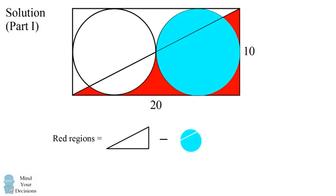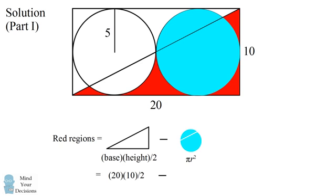We now solve for the area of each piece. The area of a right triangle is its base times its height divided by 2. The area of a circle is pi times r squared. The right triangle has a base of 20 and a height of 10. The circle has a radius equal to half the height of the rectangle, so the radius equals 5. The area of the red regions is therefore 100 minus 25 pi, or approximately 21.46.